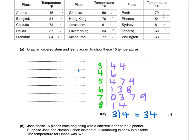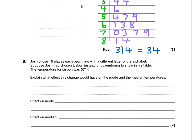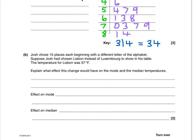First we need to find the mode in the original set of data. The mode is 34 because there are two 34s and no other temperature appears twice. If we replace Luxembourg's temperature of 34 with Lisbon's temperature of 57, that gives us two 57s and only one 34, so the mode would change from 34 to 57.